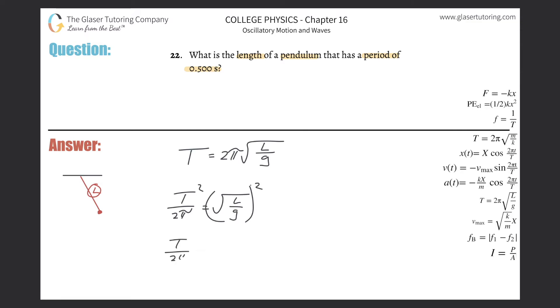So it's going to be T over 2π squared will equal L over g, and then finding L, multiply the g across. And that's it. There's the formula. All we have to do now is plug in.